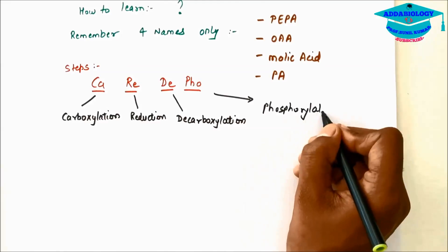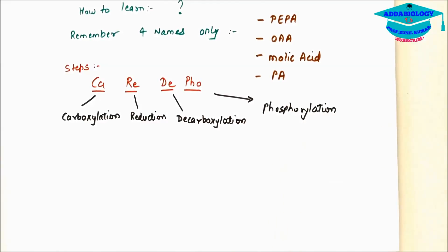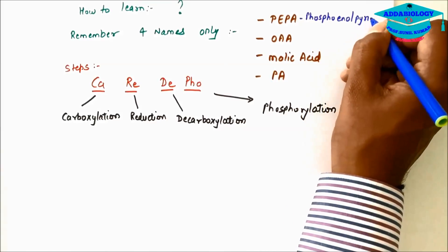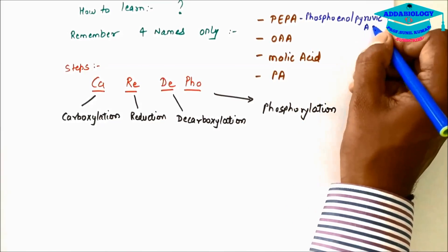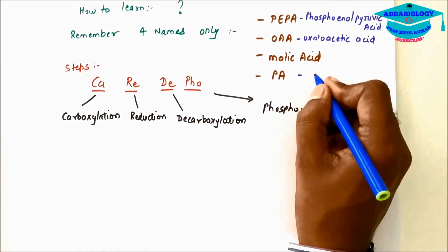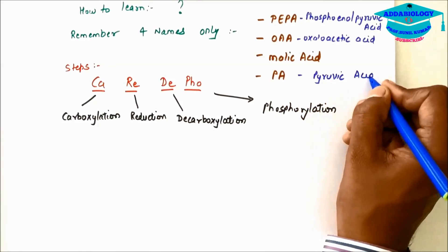So remember CARIDEFO, PEPA, OAA, MAPA. PEPA is for phosphoenol pyruvic acid. OAA stands for oxaloacetic acid. And PA stands for pyruvic acid.